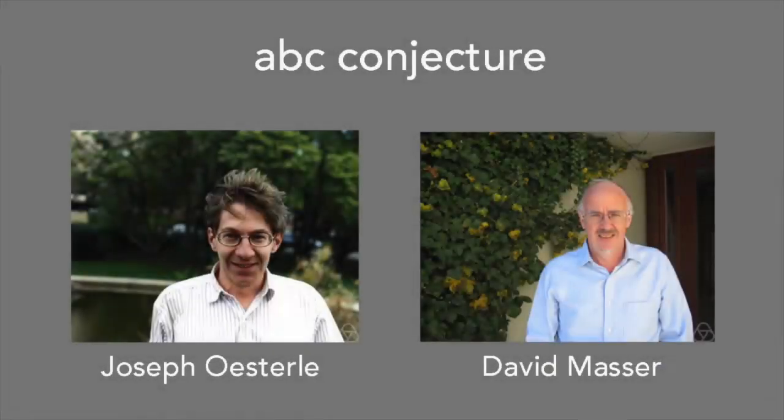The ABC conjecture was first put forward in 1980 by Joseph Oesterle of the University of Paris and David Masser of the Mathematics Institute of the University of Berlin, Switzerland. It's considered one of the most important unsolved problems in number theory. Let's find out more about it.